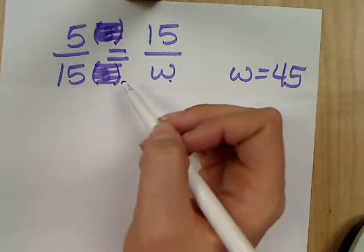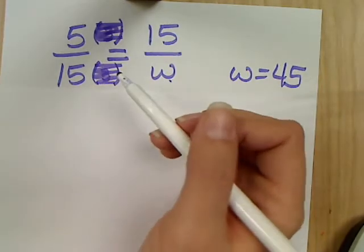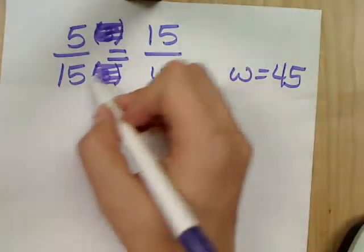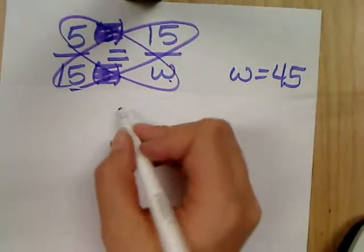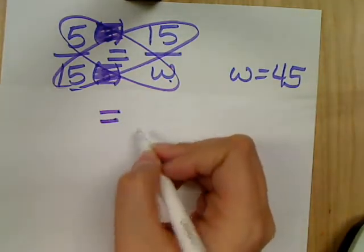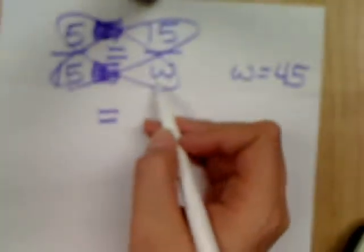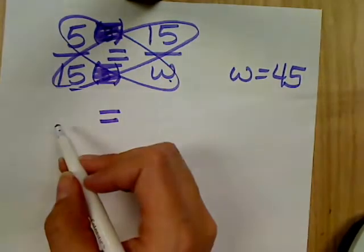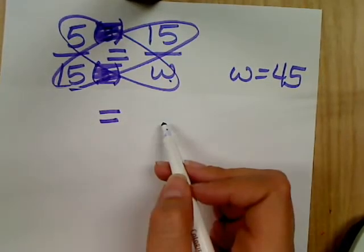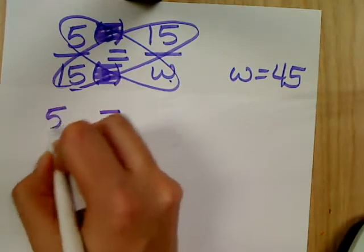So without using the shortcut, I can cross-multiply. So we're going to do 15 times 15 and 5 times W. Bring down my equal sign. 5 times W is what? Good, 5W. Which way do I need to put it, over here or over there? Doesn't matter, right? Whichever side I want.